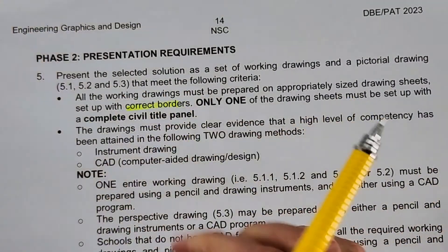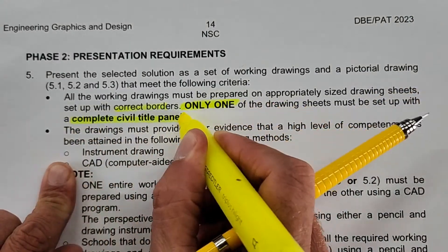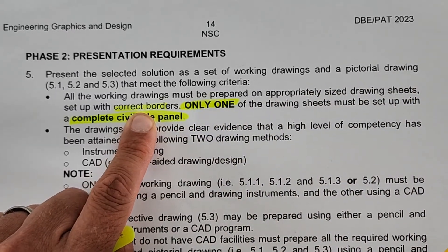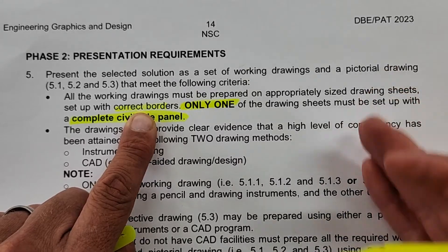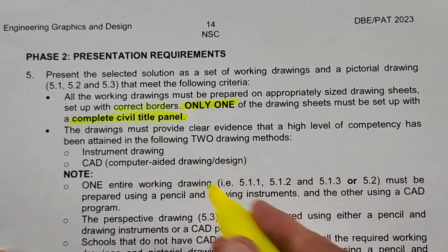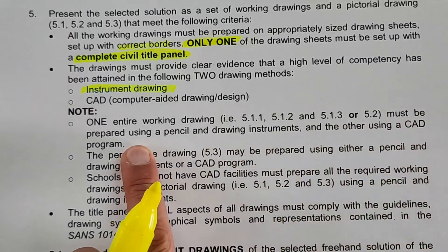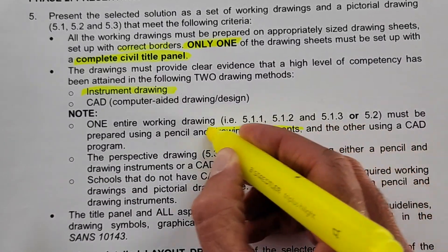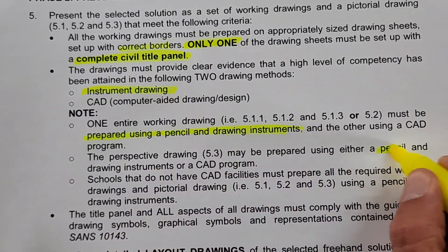One of these sheets must be set up with a complete civil title panel — only one must have the complete civil title panel. The rest of the pages must still have proper neat borders with all the details: the page number, your name and surname, the date of completion, and the title of the drawing. One entire working drawing must be prepared using pencil and drawing instruments; the others can be done in CAD. We are going to do all of ours in pencil.